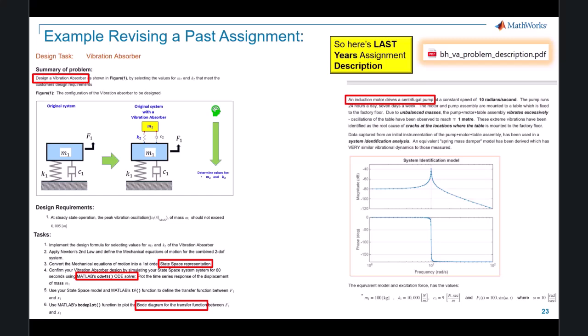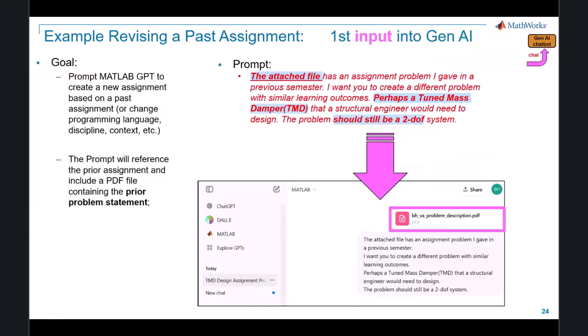Now let's chat with MATLAB-GPT and create a brand new assignment. So MATLAB-GPT has a query submission box that we can interact with. In the submission box, we'll first upload our PDF document that defines last year's problem. And then we'll tell MATLAB-GPT that we want a different problem description that has similar learning outcomes as the one defined in the PDF file. We'll give it some hints along the way. Perhaps a tuned mass damper might be the way to go. And we'll specify that we'd like to keep the problem at the two degree of freedom level of complexity.